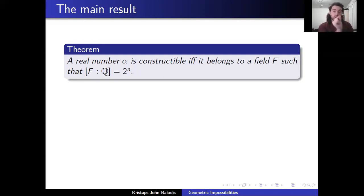This theorem is saying that it does belong to some extension of the rational numbers, some sort of in-between, which has degree a power of 2. And conversely, every degree power of 2 extension of the rationals contains only constructible numbers.